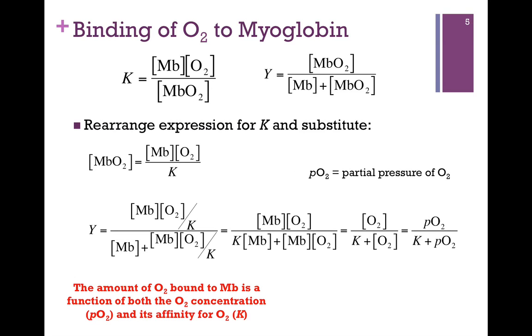When we combine these two expressions, let's first rearrange that expression for K. And so now we have an expression for the concentration of the bound form, and we're going to substitute that in our expression for Y. We do that in the bottom of the screen left here. We've substituted that expression in for our expression for Y.